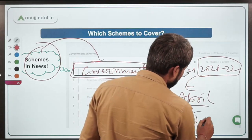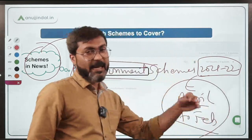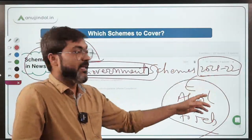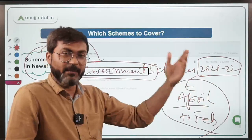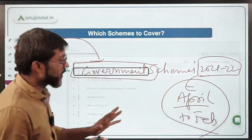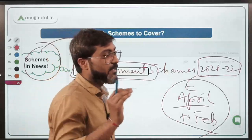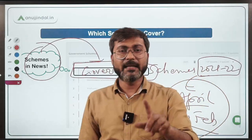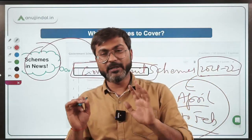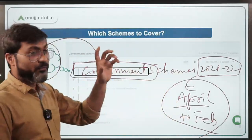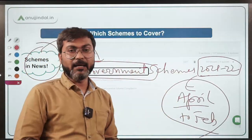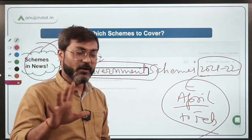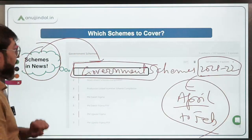For enrolled students, a separate document is provided in the government scheme folder named 'Government Schemes 2021-22', covering schemes from April to February, and it will be updated until Phase 2 examination. For non-enrolled students, PDFs of PIB sessions are provided daily on the Telegram channel. Please join that Telegram channel to get all the session PDFs, and from those you can find all the schemes which have been in the news for the last one year.